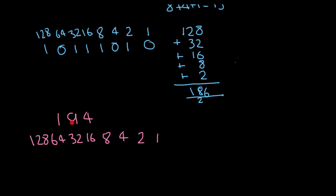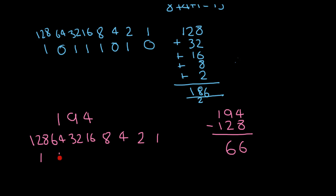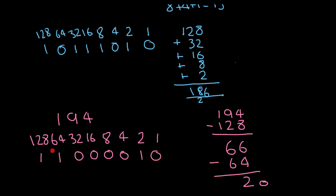The method is this: I ask myself, is 194 greater than or equal to 128? If it is, I put a one underneath it and subtract that number from my total. So I start with 194, subtract 128, and end up with 66. Then I ask: is 66 greater than or equal to 64? Yes — so I put a one underneath and subtract 64, leaving me with two. Then is two greater than or equal to 32? No. 16? No. Eight? No. Four? No. Two? Yes — so I put a one underneath. That leaves zero. So I've converted denary 194 to binary: 11000010.